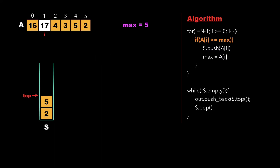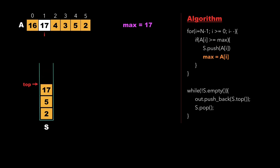Now i points to index 1, the value 17. We check whether 17 is greater than max, which is 5 — it is, so we push 17 to the stack and update max as 17, then decrement i. Now i points to the first element, value 16. We check whether 16 is greater than 17 — since it is not, we exit the for loop.